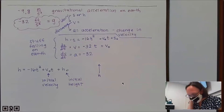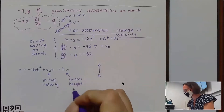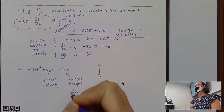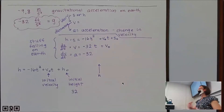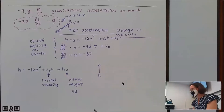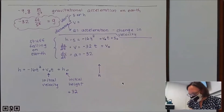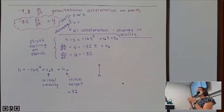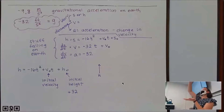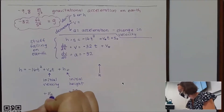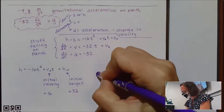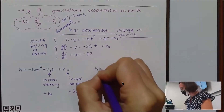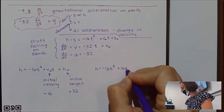The diver's diving board is 32 feet off the ground, so initial height is positive 32. The diving board is above the pool, not below the water. With an initial velocity of 16 feet per second, jumping off the diving board to go into the water gives a positive 16. That makes the height equation: h(t) = negative 16t squared plus 16t plus 32.